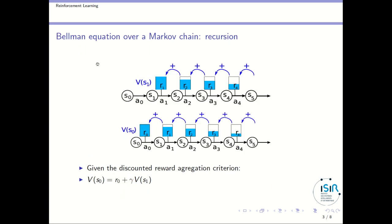So how can we compute these value functions? Let's focus on the value first. Imagine an agent which is in S0, performs A0, then is in S1, etc., following this Markov chain. The value of being in S1 is R1 plus gamma times R2 plus gamma squared times R3, and so on. The value of being in S0 is R0 plus gamma times R1 plus gamma squared times R2, etc. So in fact, the value of S0 is R0 plus gamma times the value of S1. That recursive relationship is at the basis of all dynamic programming and reinforcement learning computations.